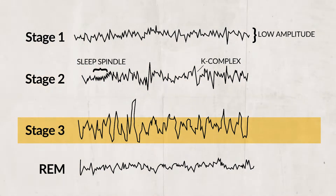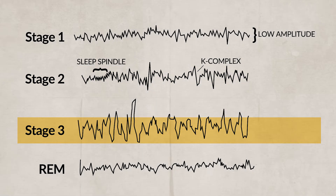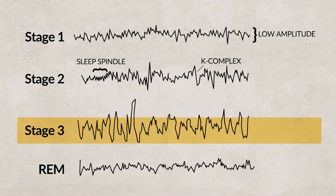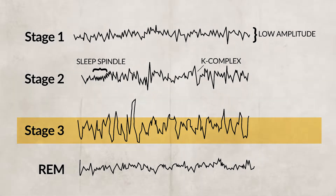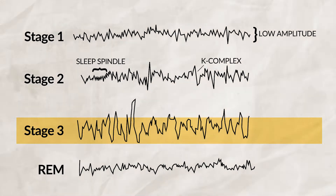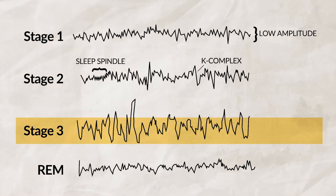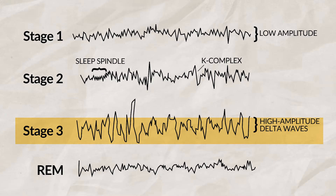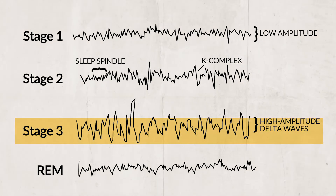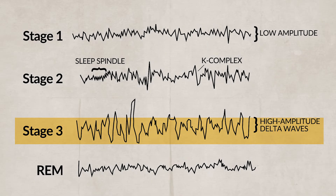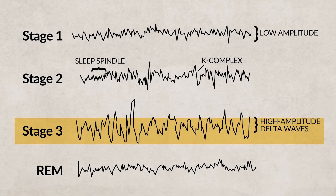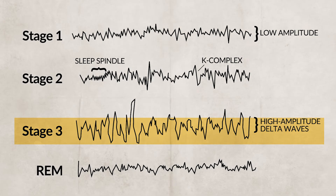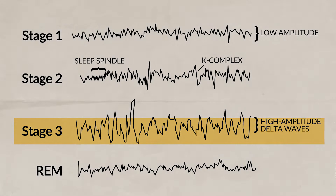Eventually you move into non-REM Stage 3, which is the deepest state of sleep. If you are woken up during this stage, you will feel foggy and groggy. During this stage, your body produces growth hormones. On an EEG, you will start to notice more delta waves as your body is very relaxed. Stage 3 is also when you might experience sleepwalking, night terrors, or sleep talking. This stage lasts about 30 minutes.